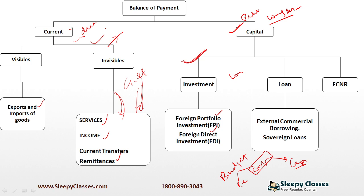To summarize: in balance of payment, the difference between current and capital is based on duration. Quick succession transactions are current. Long-term investments or loans are capital. In the budget, capital is generally about creating capital goods — roads, infrastructure. We consider that as the capital head.